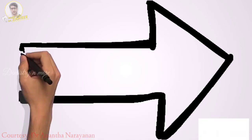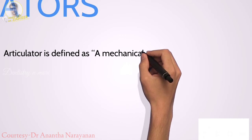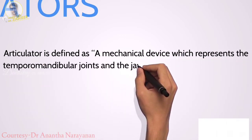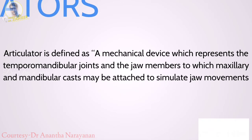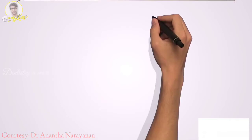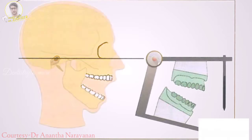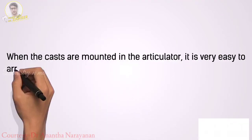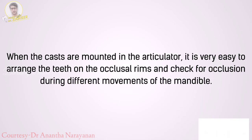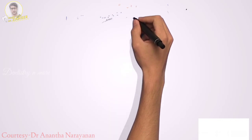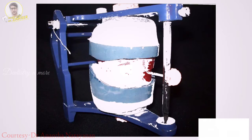An articulator is defined as a mechanical device which represents the temporomandibular joints and the jaw members to which maxillary and mandibular casts may be attached to simulate jaw movements. An articulator simulates the jaw movements made by the mandible in relation to the maxilla. When the casts are mounted in the articulator, it is very easy to arrange the teeth on the occlusal rims and check for occlusion. The rims can be transferred to the instrument, which will resemble and perform the functions of the maxilla, mandible, and TMJ.